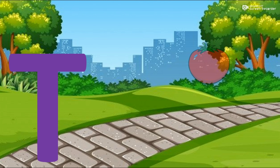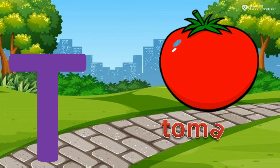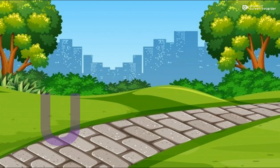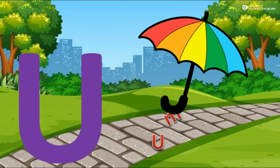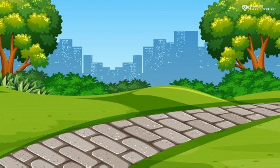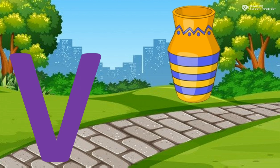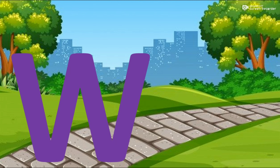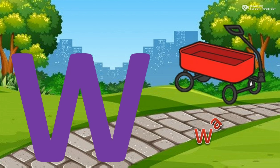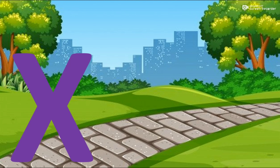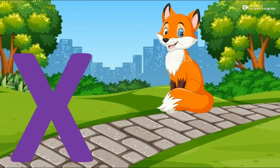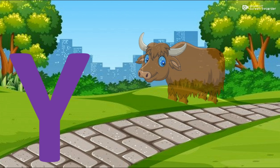T for tomato. U for umbrella. V for vase. W for wagon. X for fox. Y for yak.